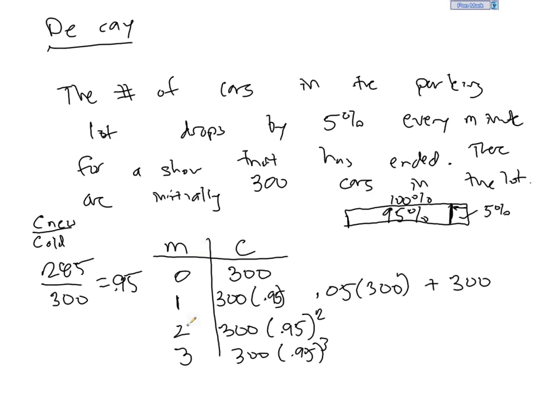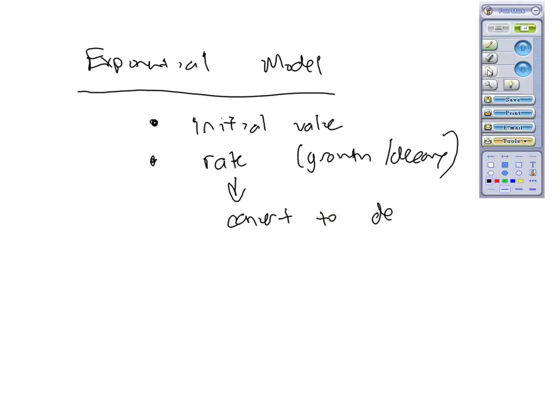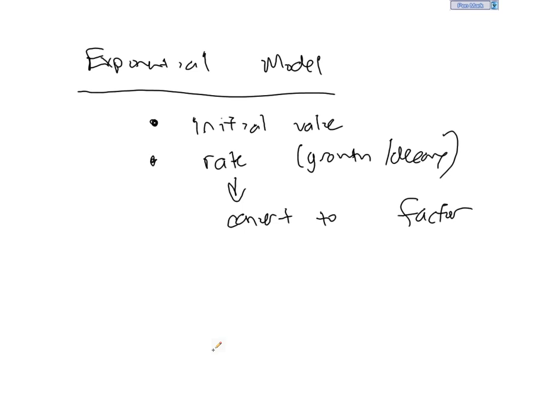So in the components of this exponential model, we needed two things. We needed an initial value, and oftentimes we know the rate, whether it's growth or decay, and then we need to convert to the factor, whether it's decay or growth.